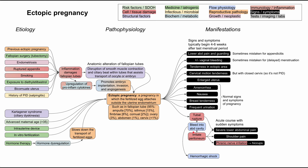Bleeding into the abdominal cavity can lead to hemorrhagic shock if bleeding occurs in severe quantities. Symptoms include tachycardia, hypotension, and syncope. There is actually a phenomenon where if the patient bleeds so much and has severe hemorrhagic shock, the tachycardia can turn into bradycardia. We're not exactly sure why that happens, but it is possible that in a ruptured ectopic pregnancy, the patient starts with tachycardia that later turns into bradycardia.